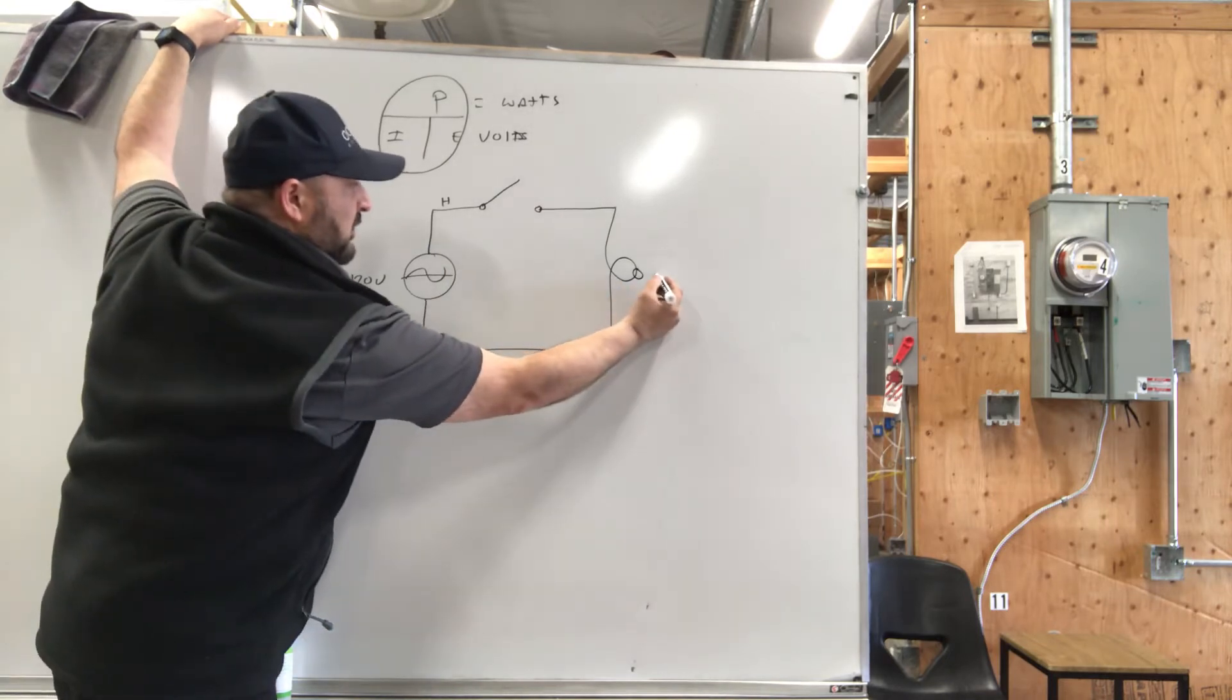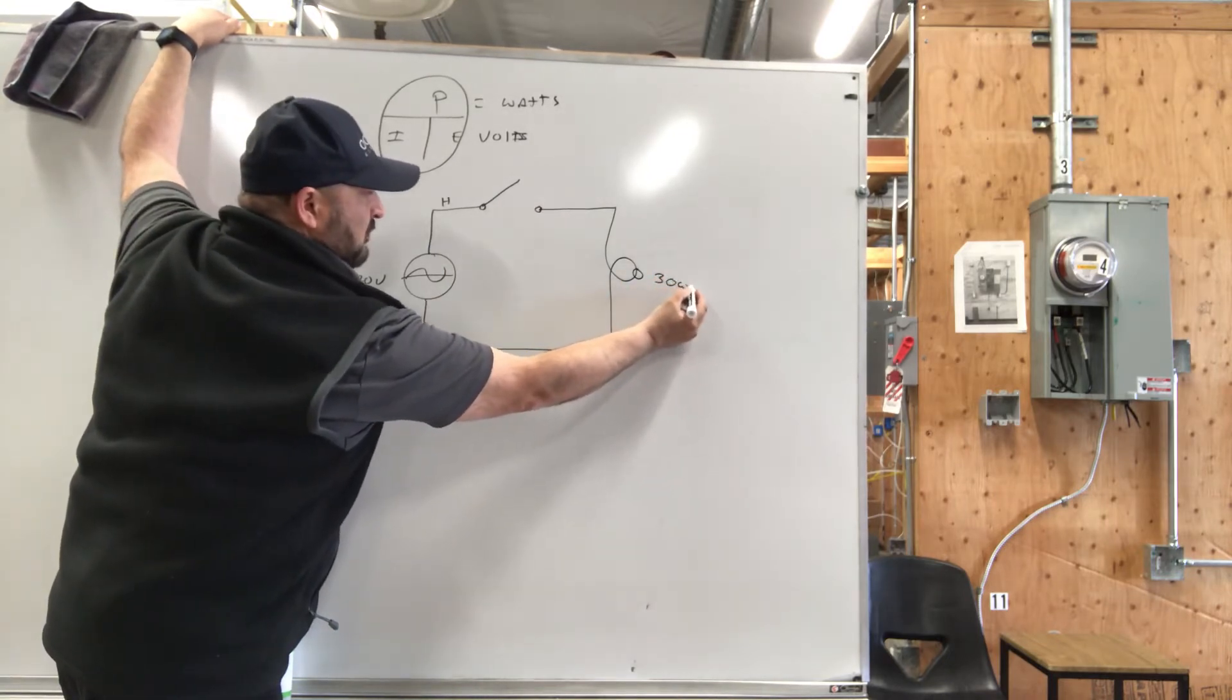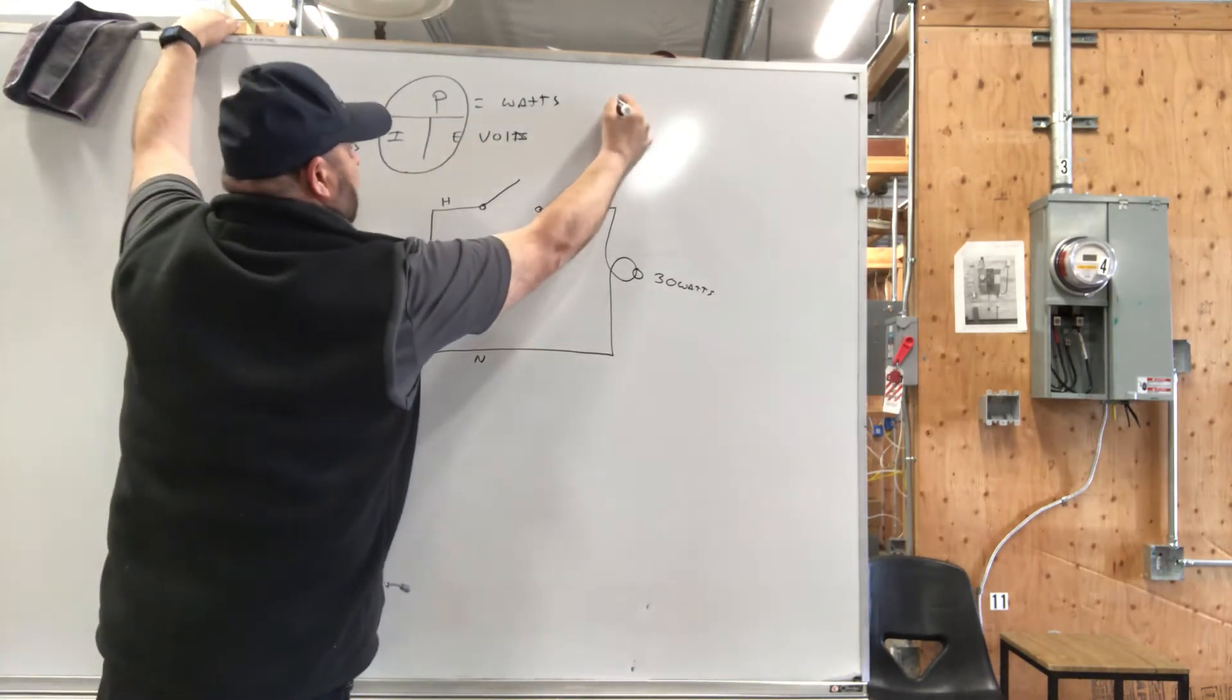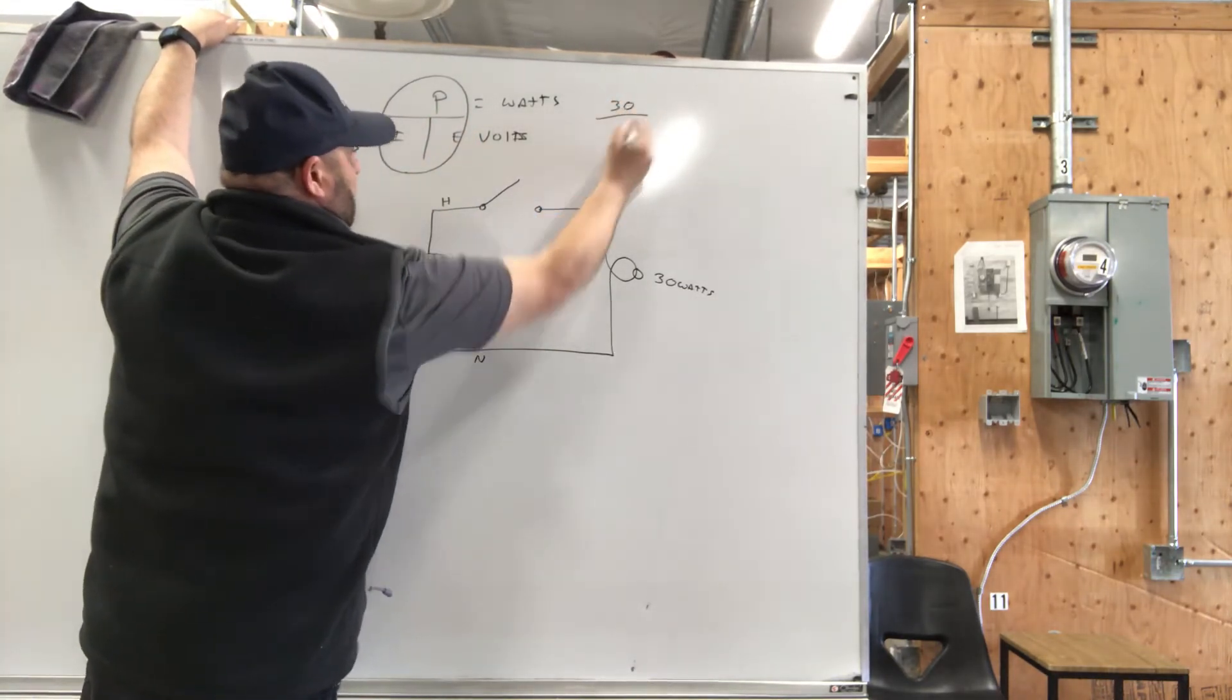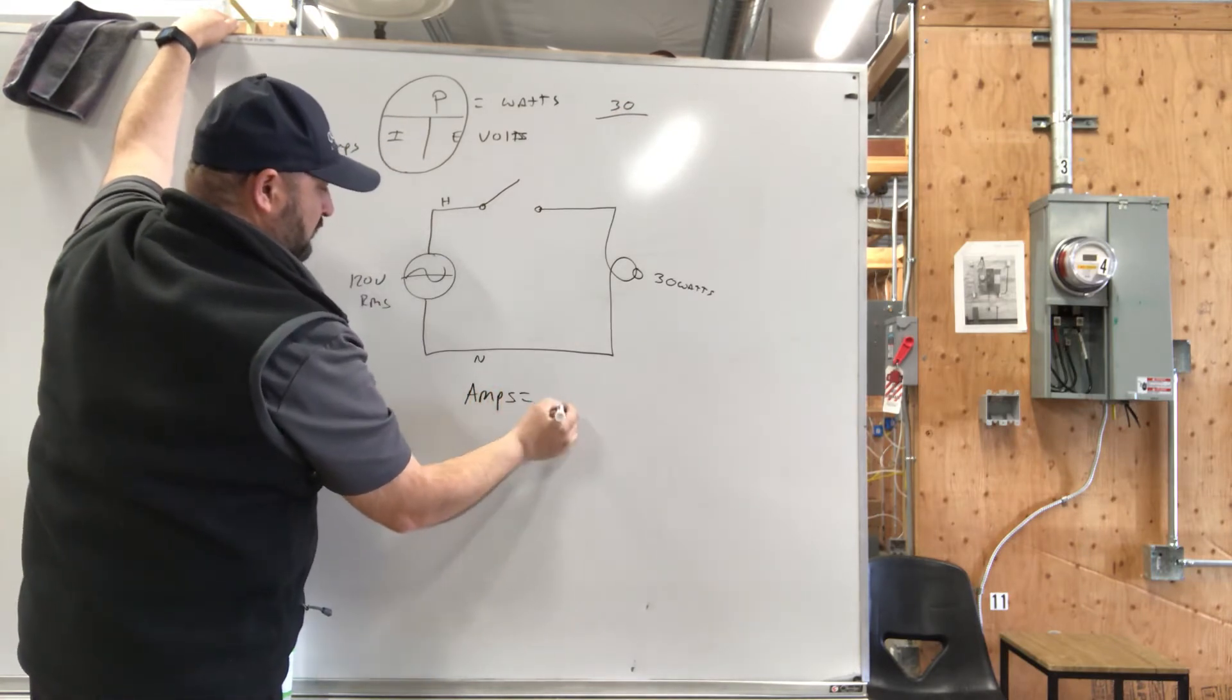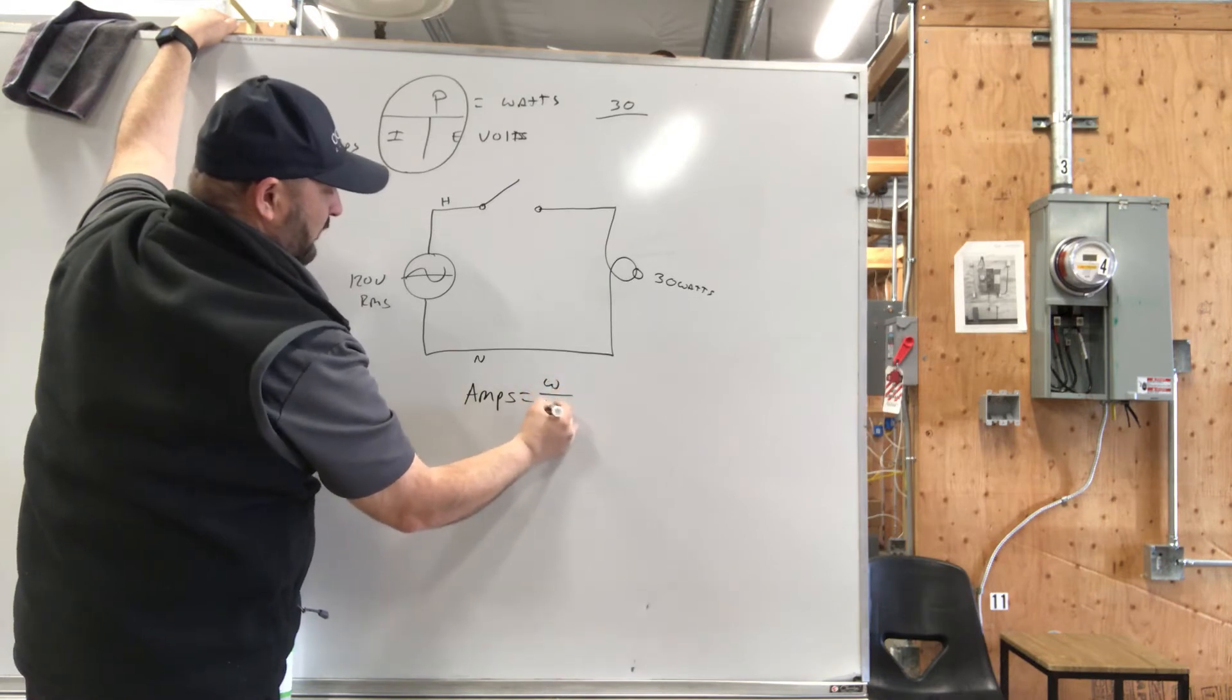We have a light bulb, 30 watts. Hence the formula for power: we've got 30 watts, and I want to find the amperage. That's watts over volts.